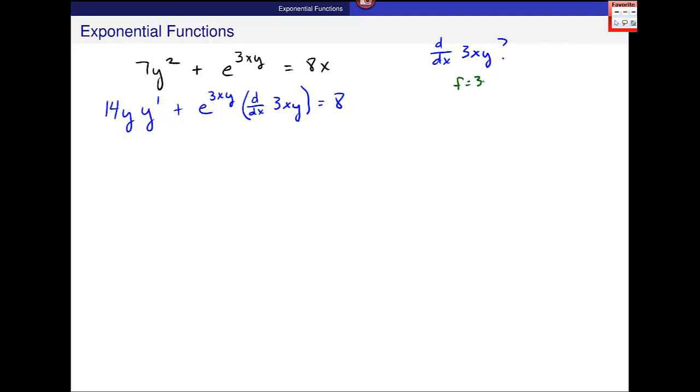F is 3x, F prime is 3. G is y, but g prime will be y prime. So fg prime plus gf prime, 3xy prime plus 3y. So I'll come back here and put that in. 14y times y prime plus e to the 3xy times 3xy prime plus 3y is equal to 8. And again, here's my y prime and here it is again.